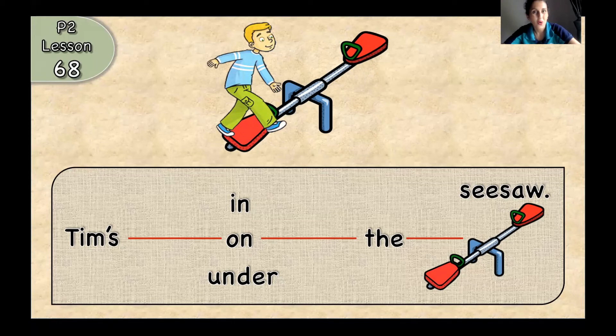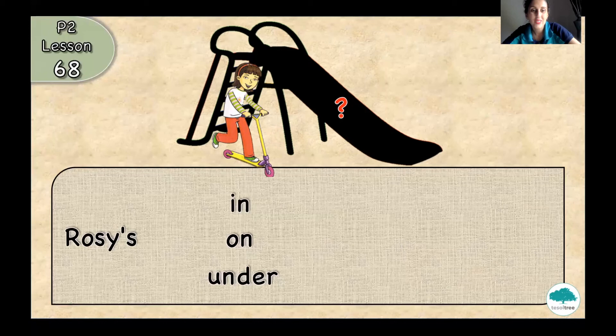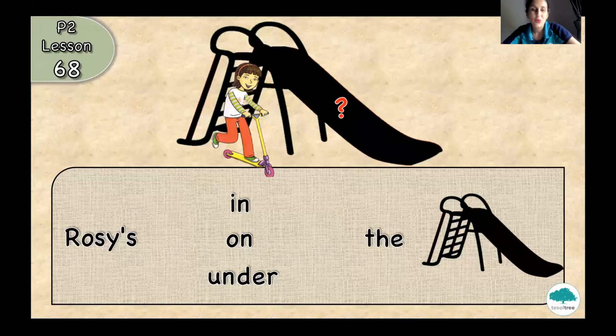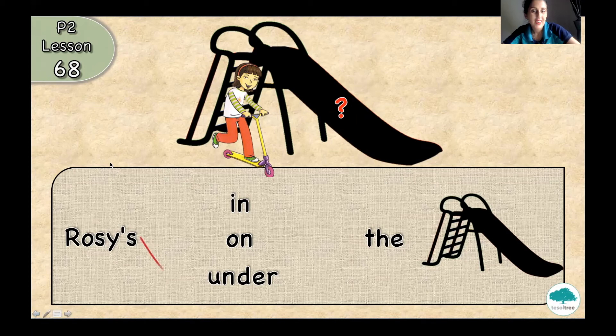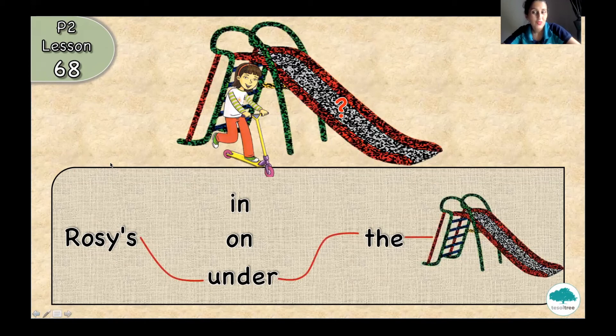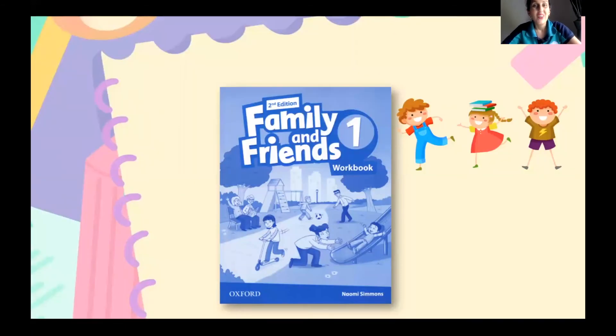Team's on the seesaw. Okay, fine. That's true. And what about Rosie? Where is Rosie? Rosie's in, on, under, the, beep. So, who knows? Where is Rosie? She is staying under the slide. Yes, Rosie's under the slide. She's going to slide down. Fine. Okay, good job, Pitu. Thank you so much.